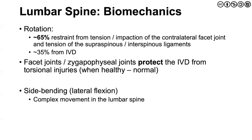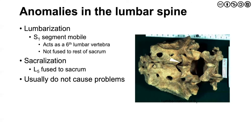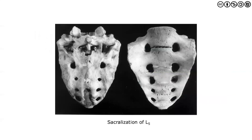One of the last topics are some anomalies in the lumbar spine. We see lumbarization, where the S1 segment is actually mobile — it acts as a sixth lumbar vertebra because it's not fused with the rest of the sacral spine. As well as sacralization, where the L5 actually fuses to the sacrum. Usually these don't cause a ton of problems other than a slight reduction in mobility. Interestingly, sometimes this happens just with age — the process referred to as ankylosing, or a fusion that occurs with degenerative and age-related changes.